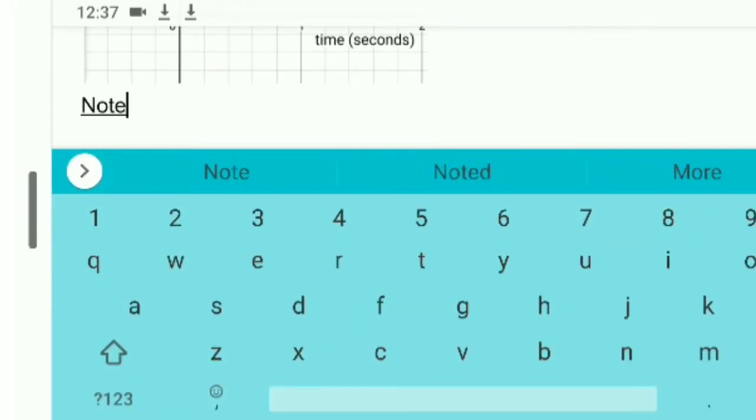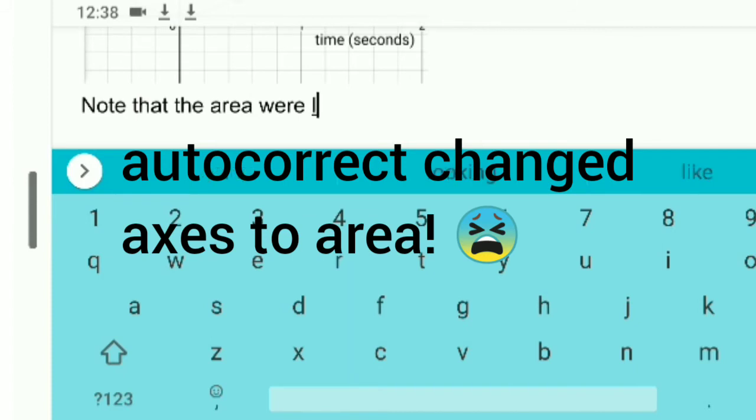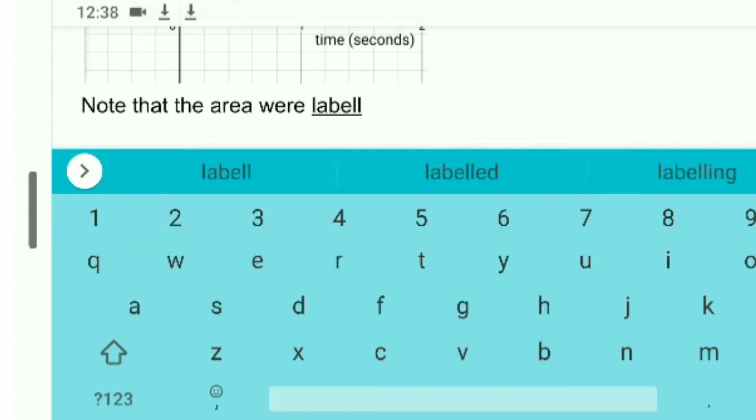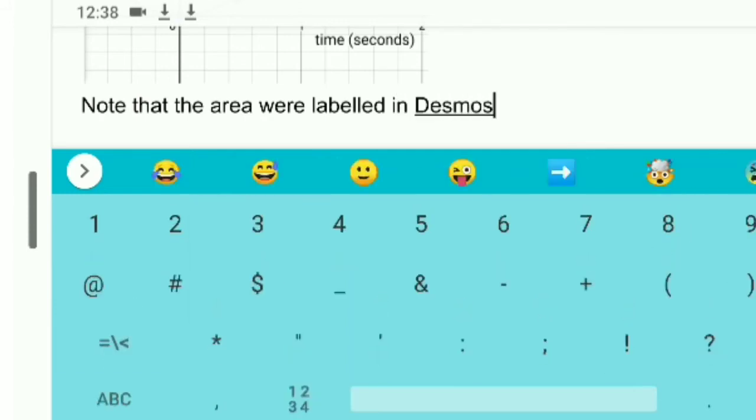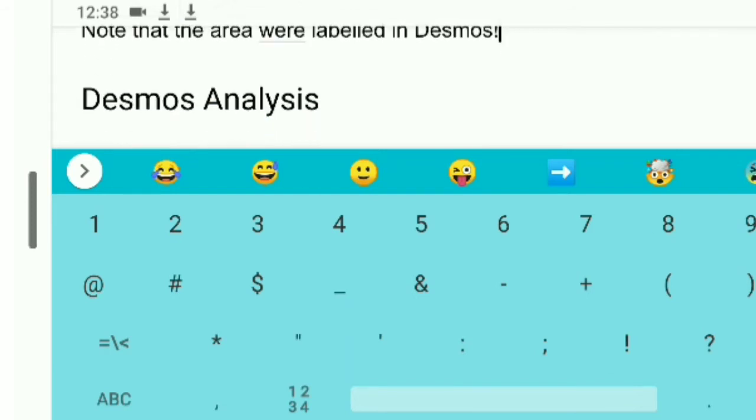Notice I've already labeled the x and the y-axis, both the variable, time, and the units. Both the variable and units belong on each axis. So I have time and seconds on the x-axis and distance in meters on the y-axis. I did those labels using the wrench tool in Desmos.